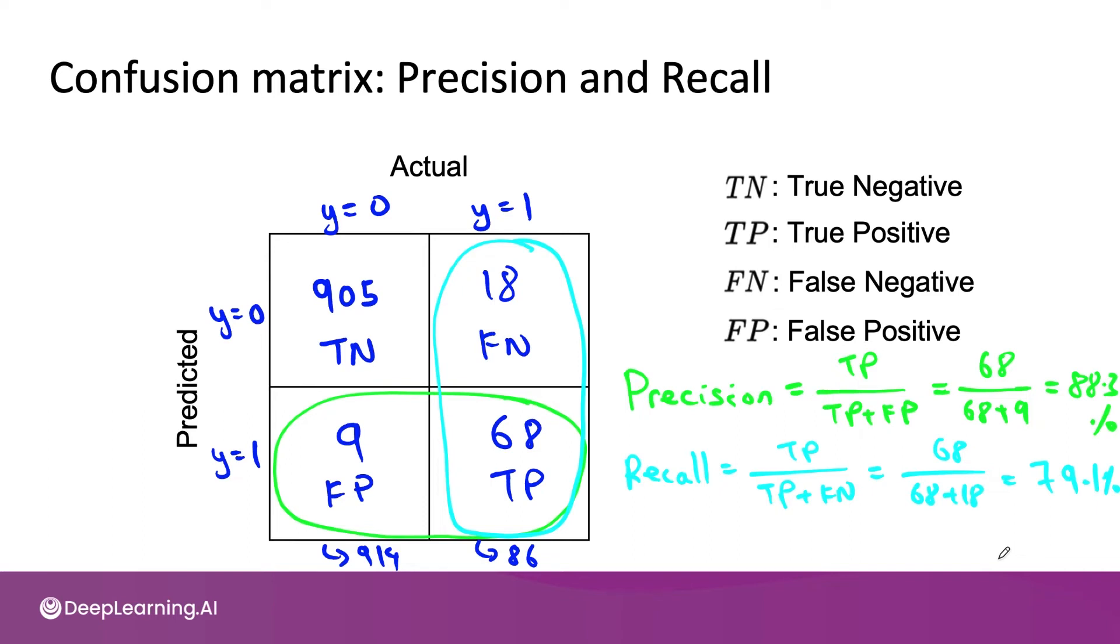And the metrics of precision and recall are more useful than raw accuracy when it comes to evaluating the performance of learning algorithms on very skewed data sets. Let's see what happens if your learning algorithm outputs zero all the time. It turns out it won't do very well on recall.